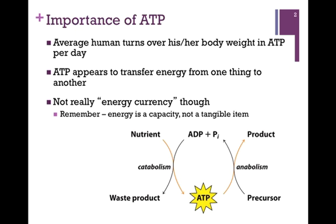ATP appears to transfer energy from one thing to another. In the illustration at the bottom of our slide, we can break down a nutrient, break chemical bonds to form waste products, and release energy, and we can use that energy to build an ATP molecule from ADP and an inorganic phosphate. Once we have the ATP molecule, we can hydrolyze it, release the energy, and use that energy to build product from precursor. So it appears that we've transferred the energy from the nutrient to the precursor via this ATP molecule.